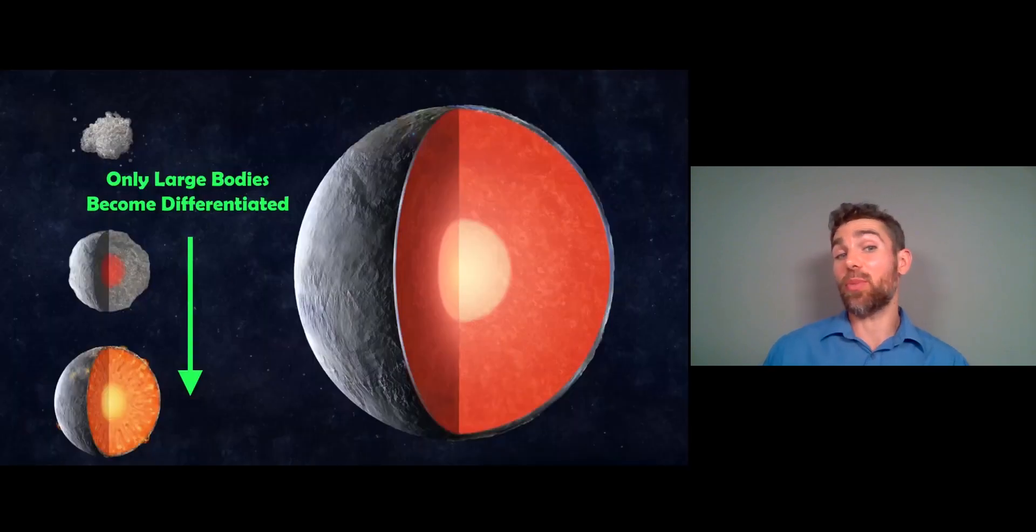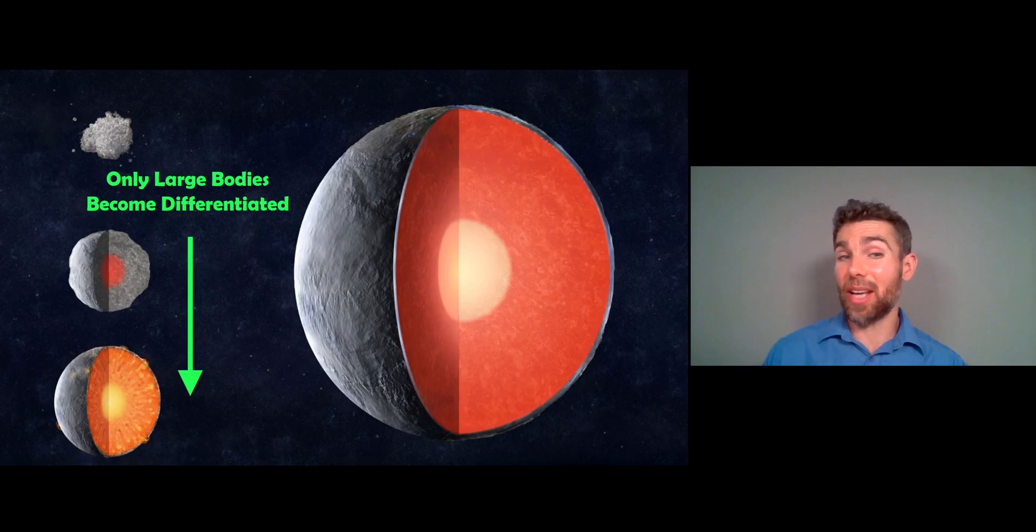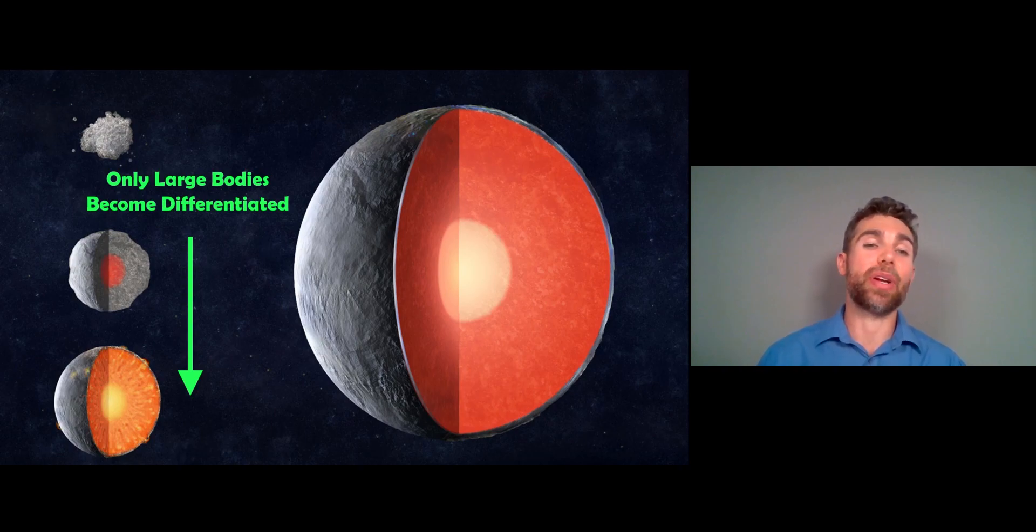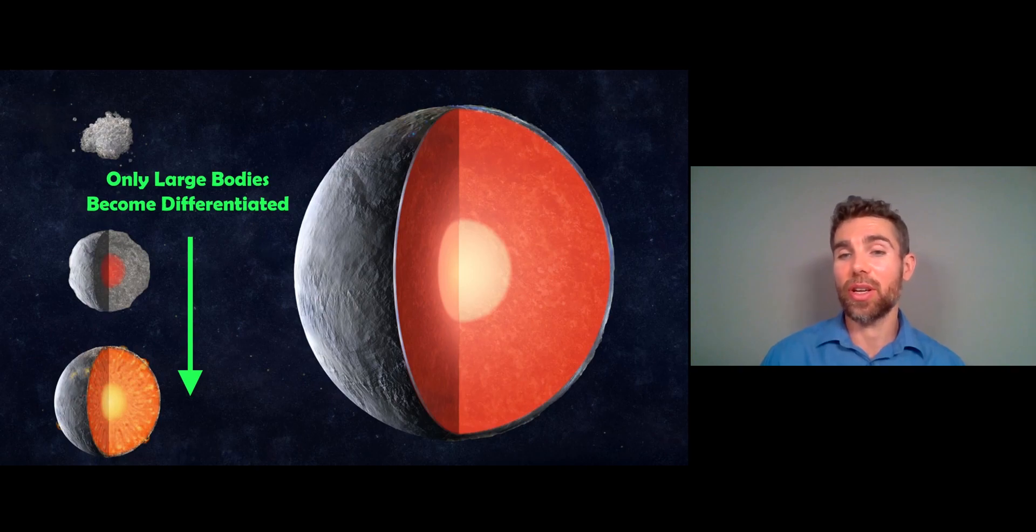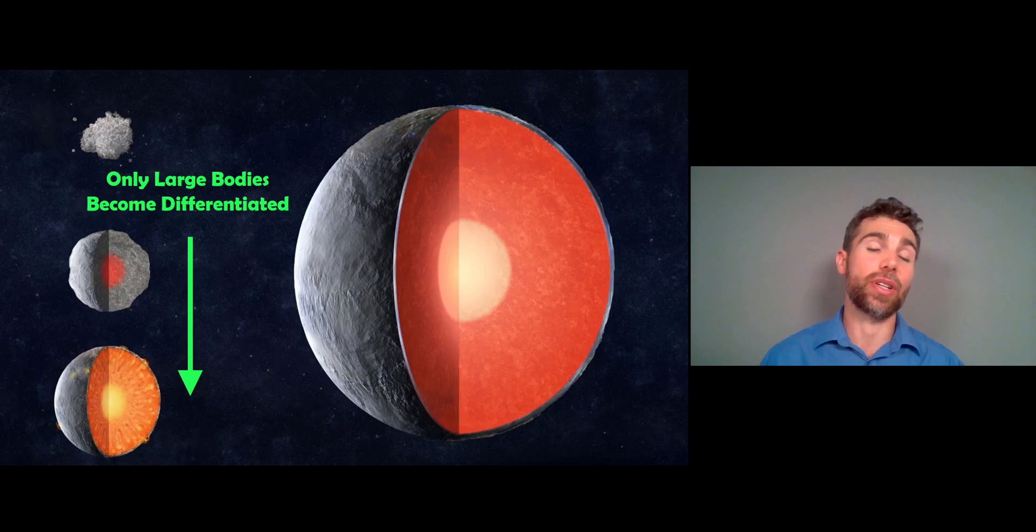Now if you have a very small object like an asteroid, that isn't going to happen. They're not big enough, they don't get hot enough to actually have that layered structure. They don't become differentiated. But as they get bigger and bigger they do become differentiated, and it's not just planets that do have this, although all planets will show evidence of this. You can get minor planets, dwarf planets, even large asteroids can become differentiated where this occurs. But the terrestrial planets all show evidence of planetary differentiation.